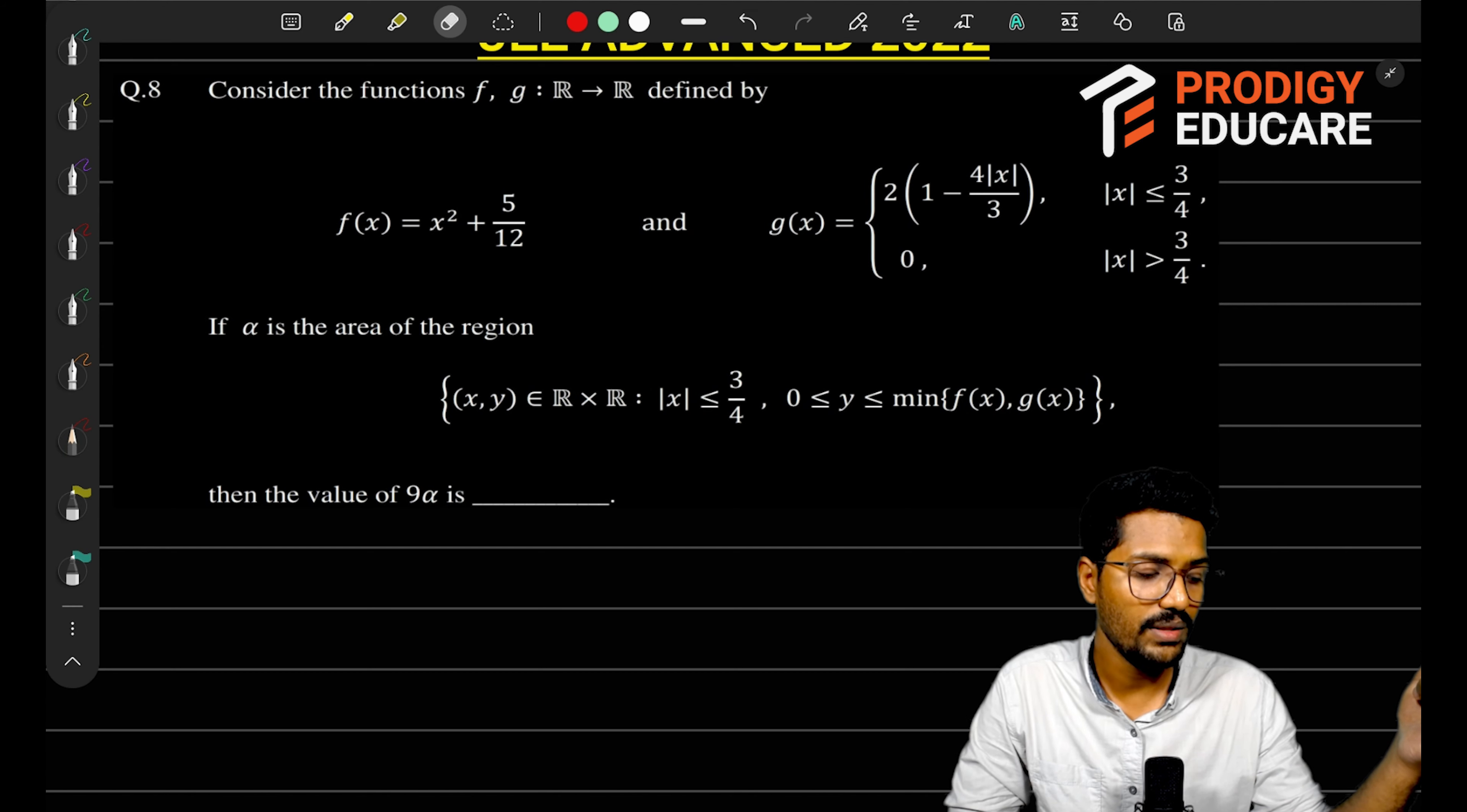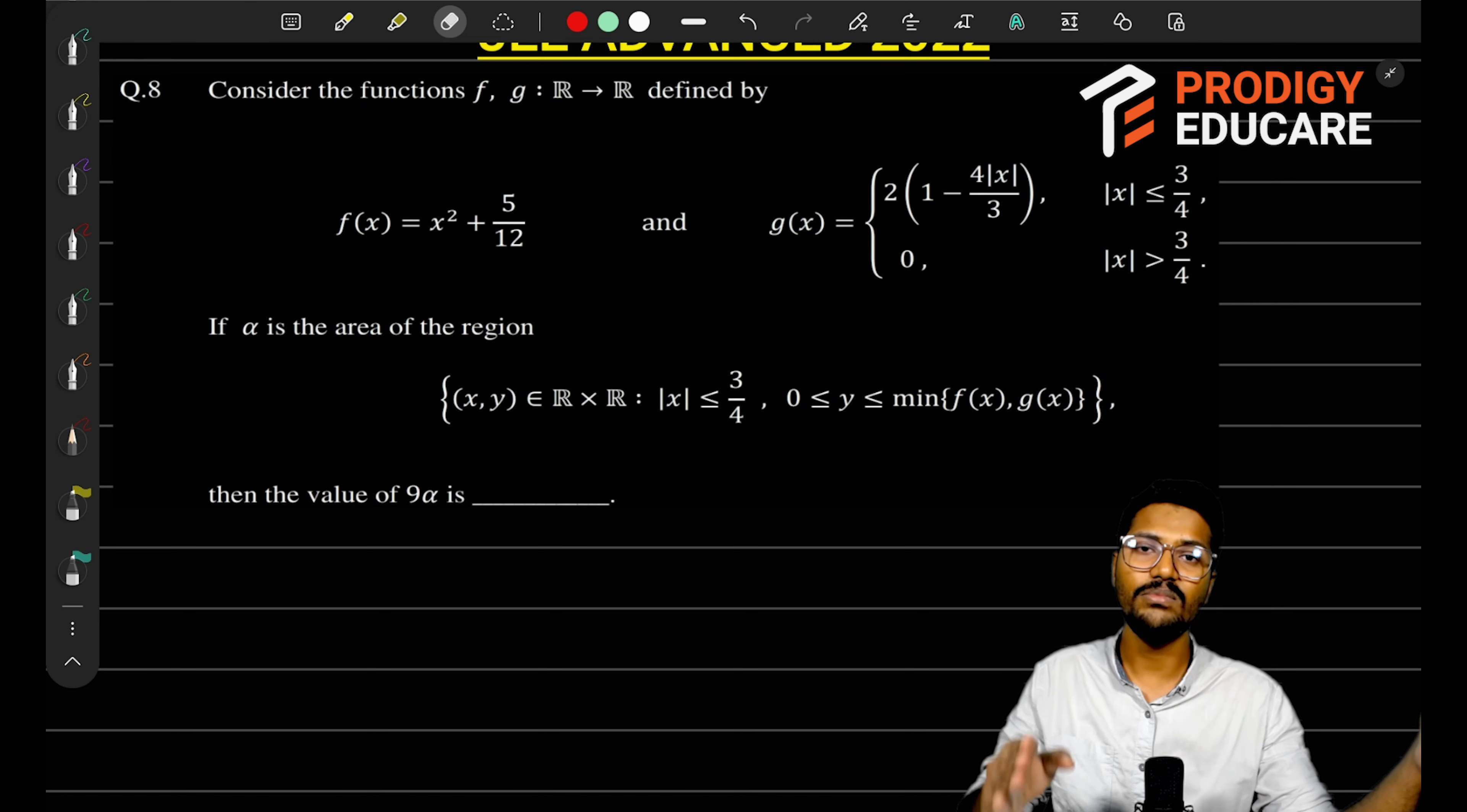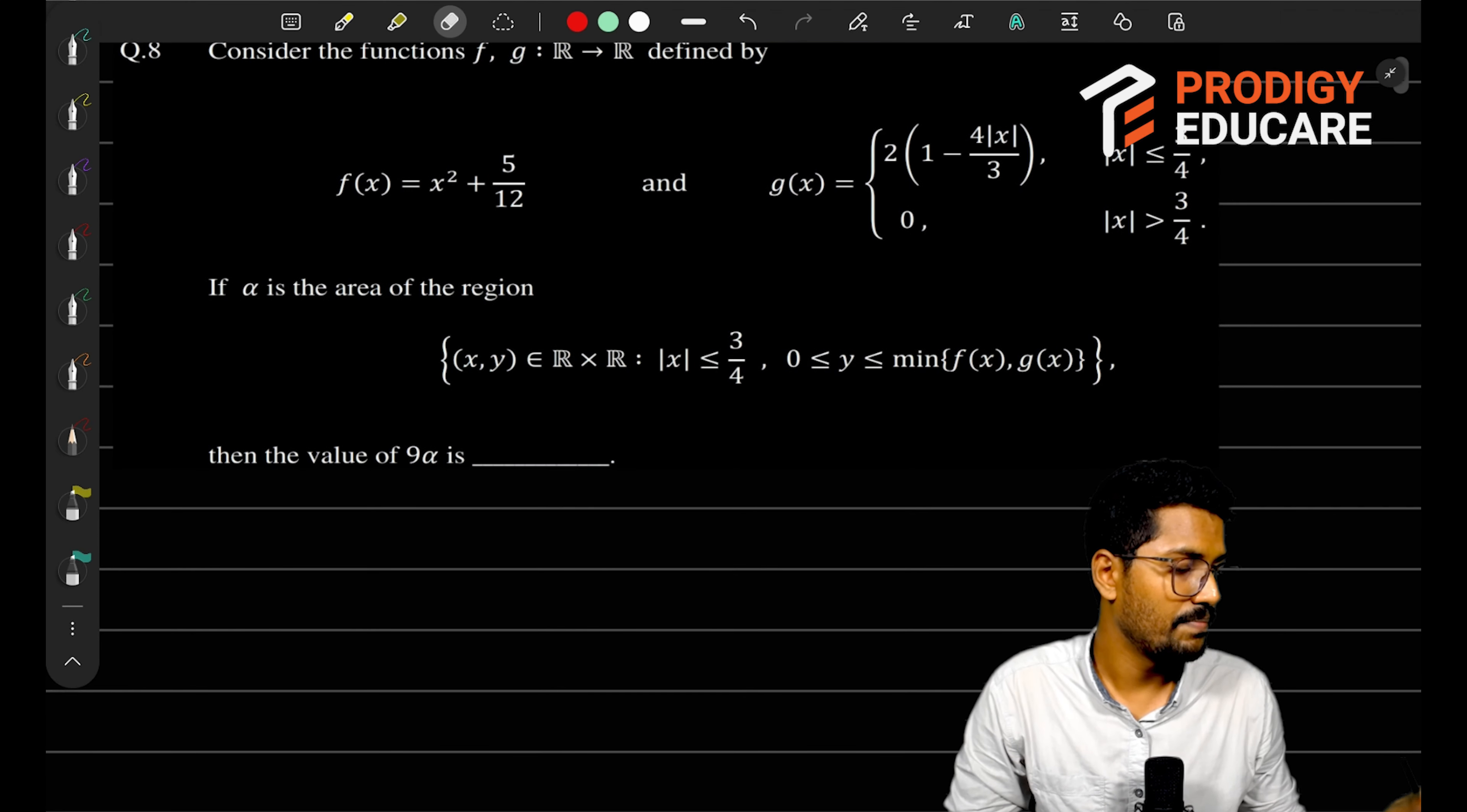In this problem, the other function is g(x). Here, there's a modulus of x. Mod of x, we know that it is symmetric about the y-axis. So if I have the positive direction of the x-axis, we have to find the intersection point. Same thing for the negative side of the x-axis. Let's find the intersection point.